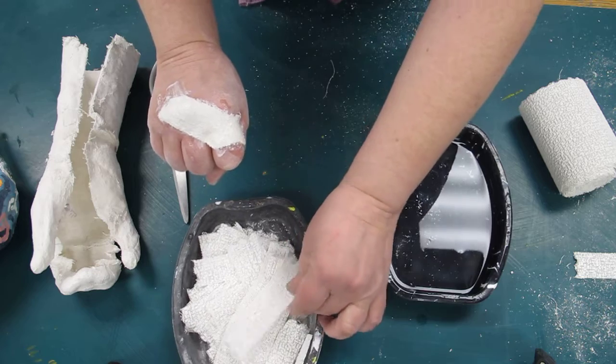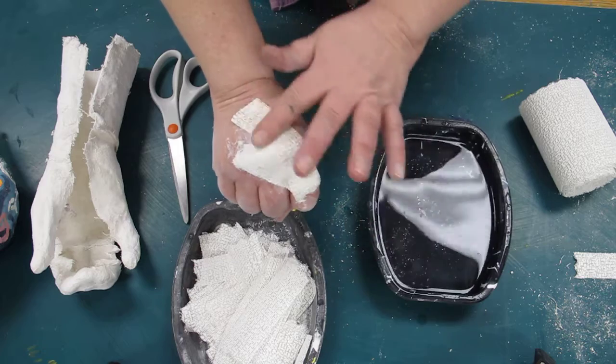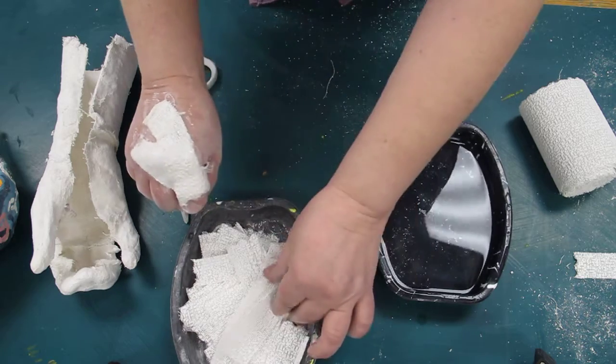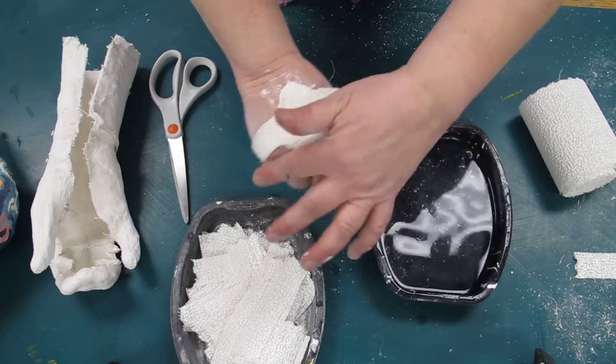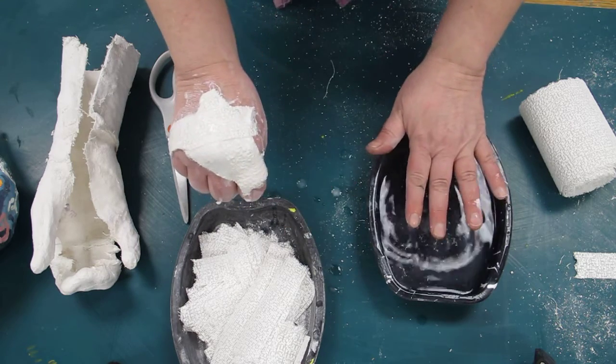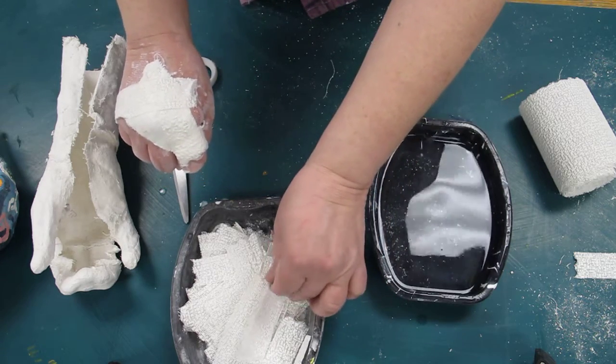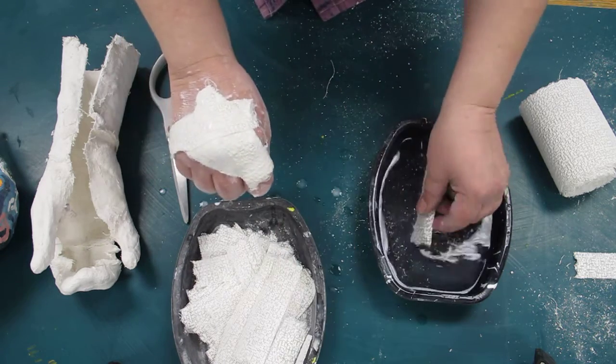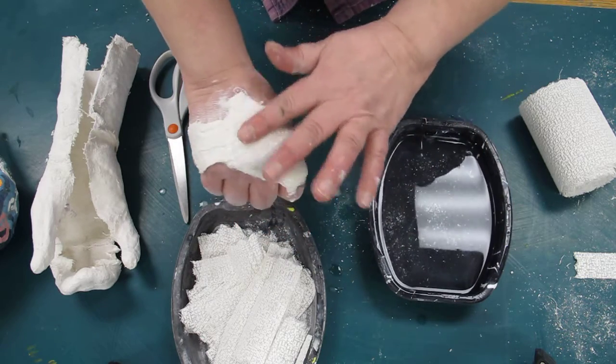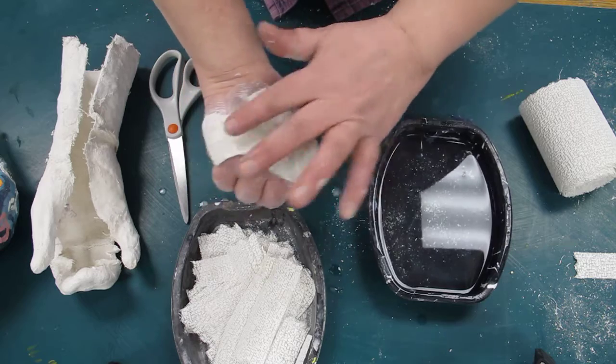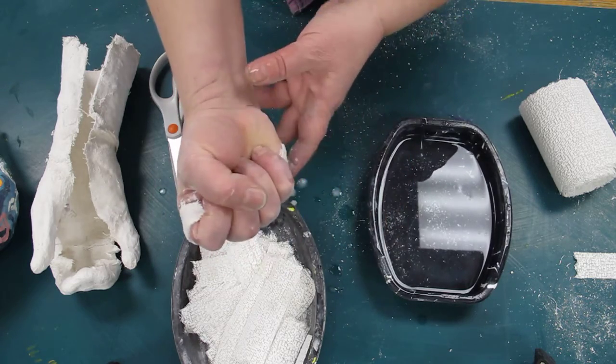And you just kind of grab it, dip it, put it on. Spread the plaster. Dip it, put it on. Now I find you do have to dip it and don't leave it in there because it does kind of lose some of its plaster and its plasterness if you just let it sit in the water. So just dip it right before you apply it.